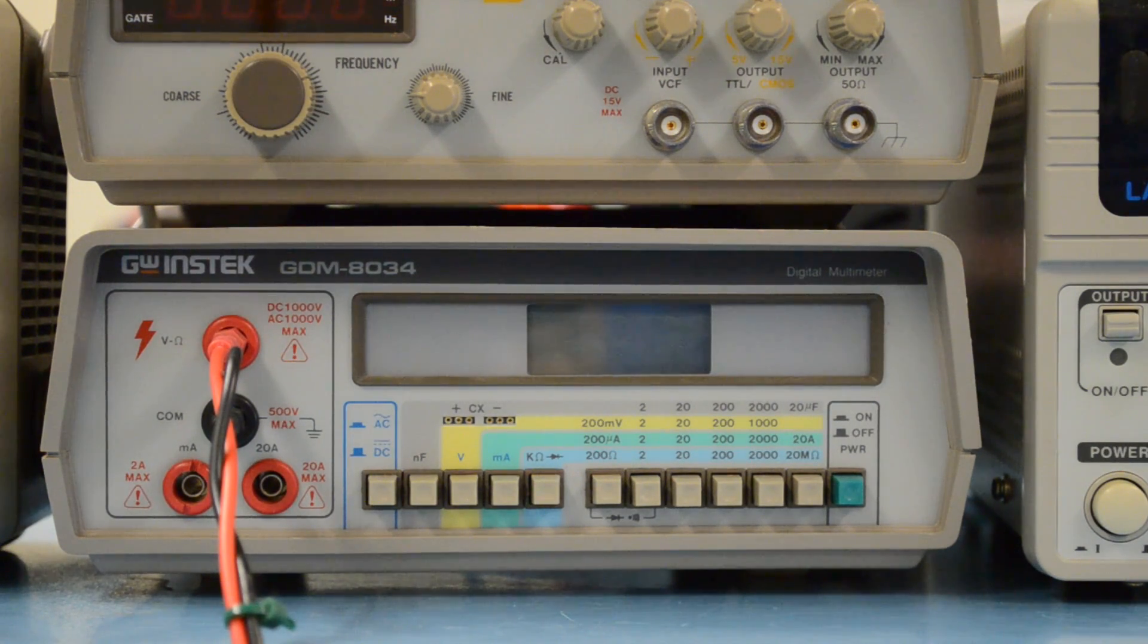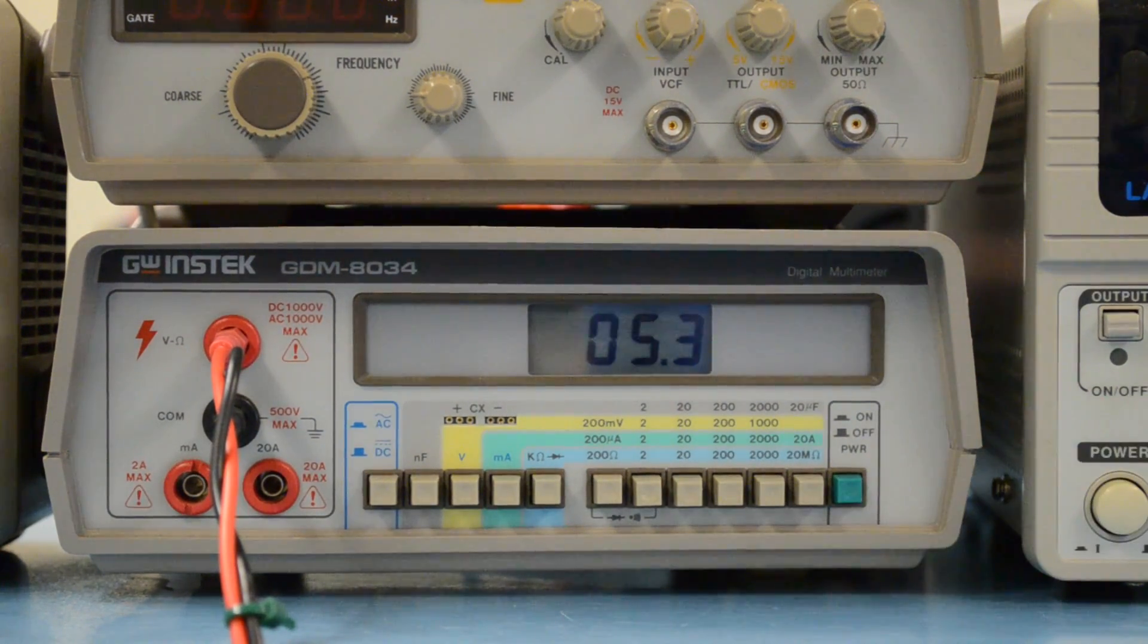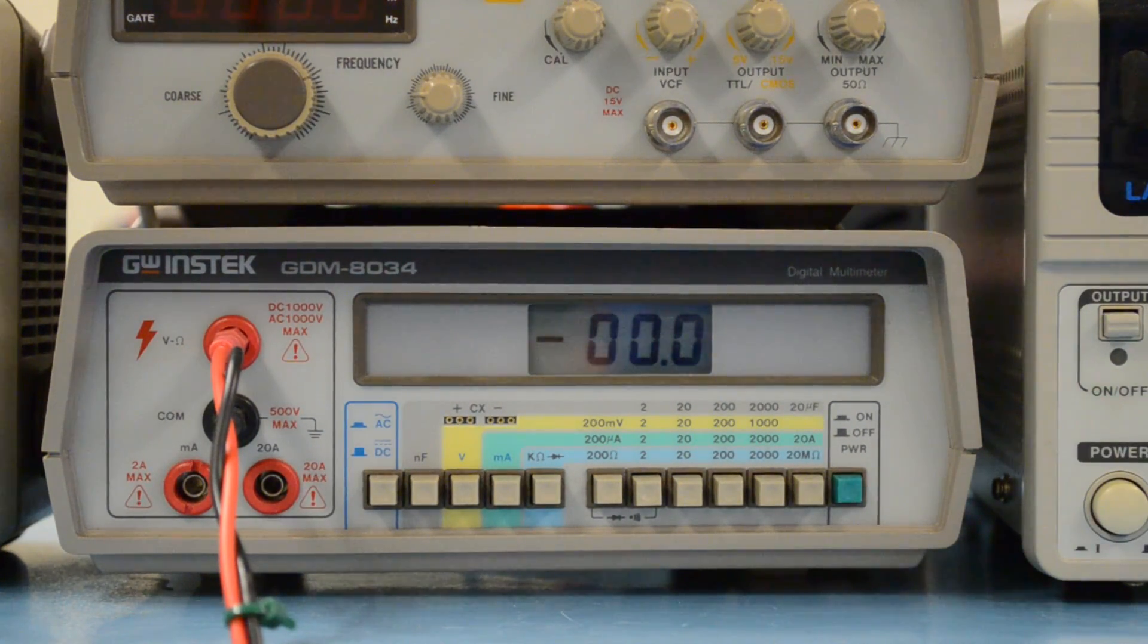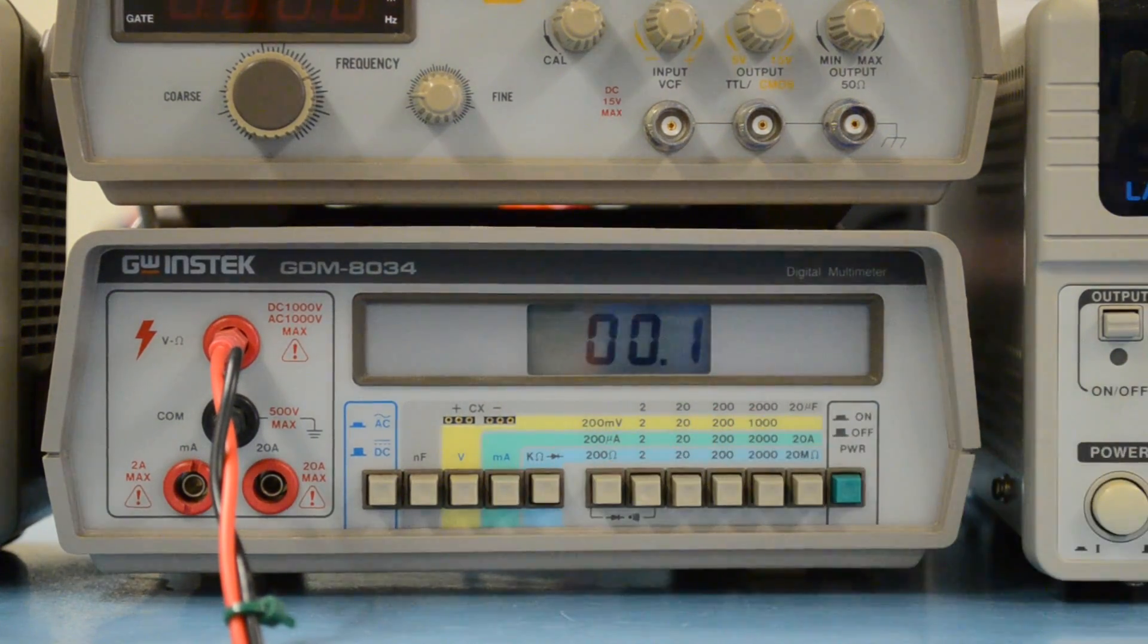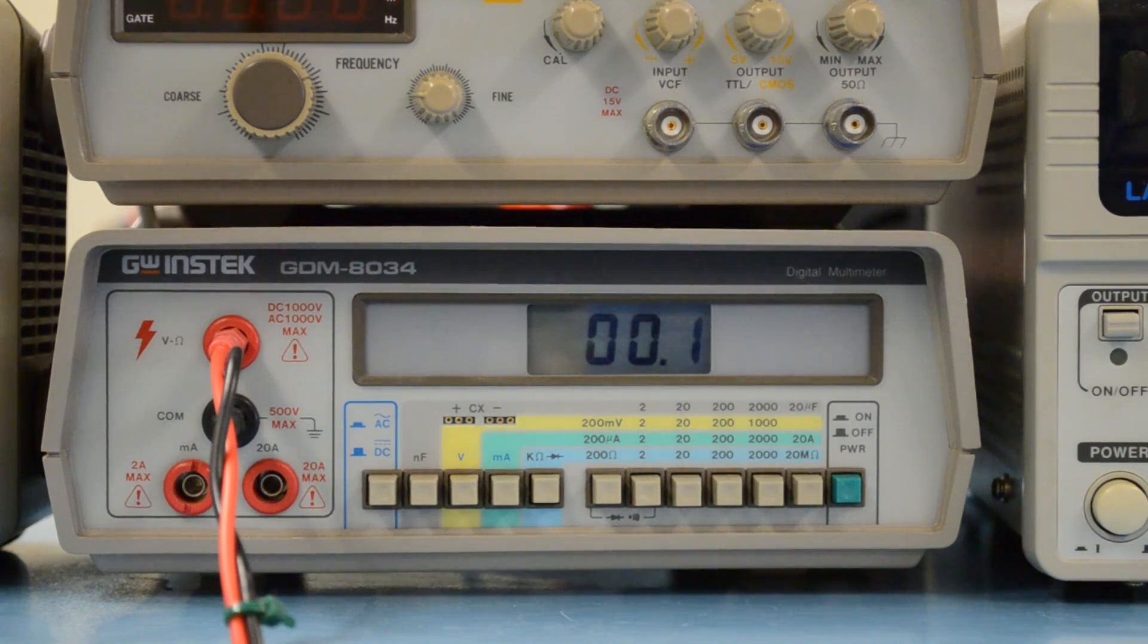Before we start, we want to make sure that we don't have any power supplies or other devices hooked up to our circuit. The flow of current impedes the measurement process and will give you false results. Let's turn on the device. We'll set it to kilo ohms to measure resistance, and we'll select an appropriate scale.